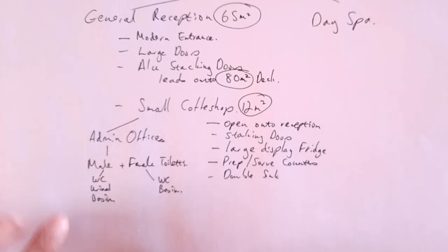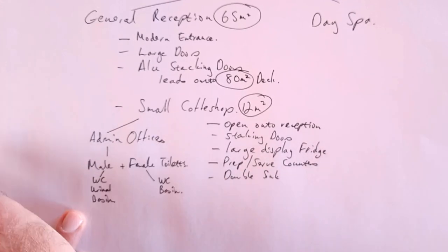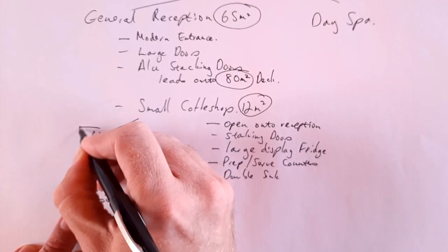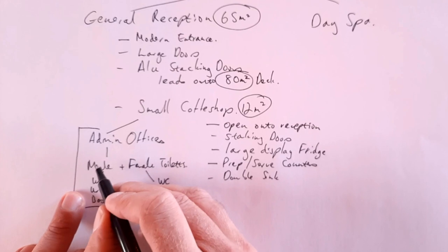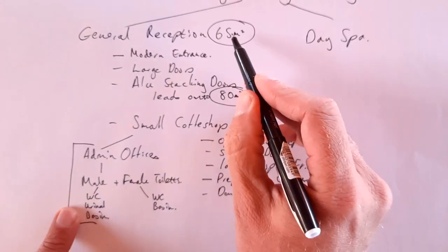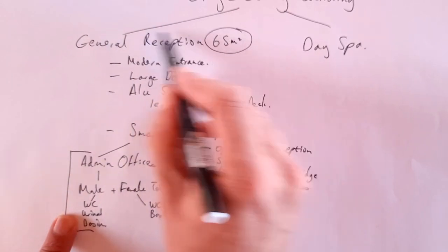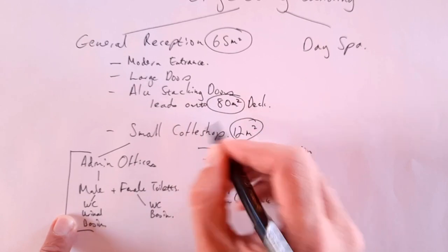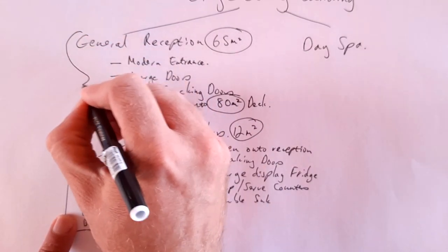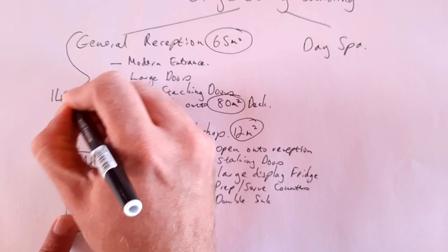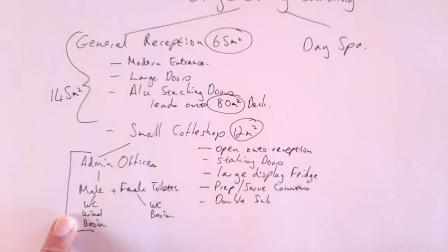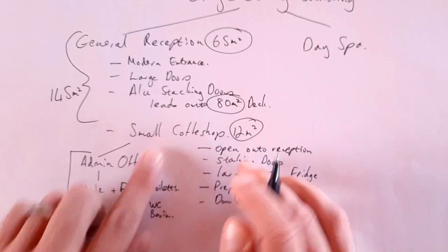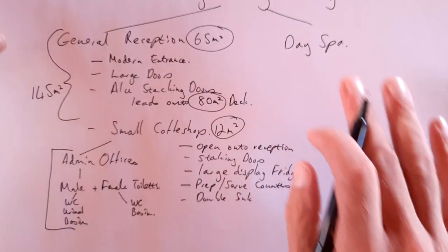They specify in our design brief that the admin and toilets area — actually, they don't specify it, we deduce this. If we have 65 square meters for the reception and 80 for the deck, that's a total of 145 square meters. The small coffee shop is 12 square meters. Let's come back to the areas in a moment and look at the day spa quickly.